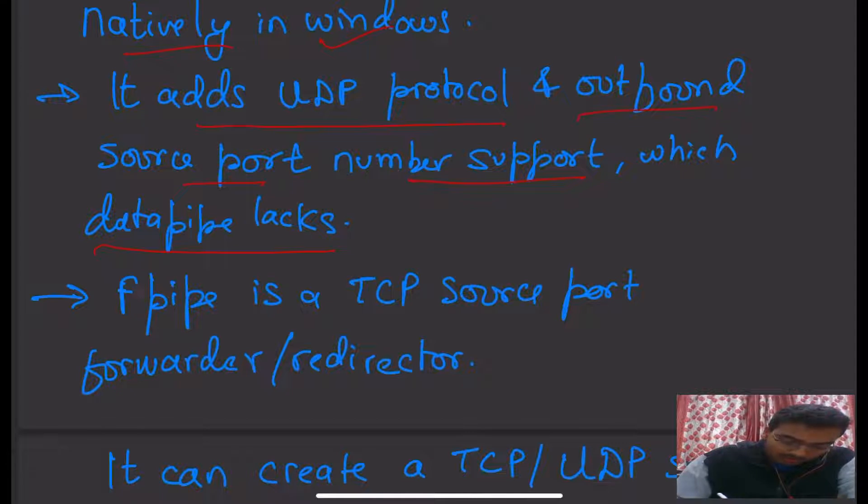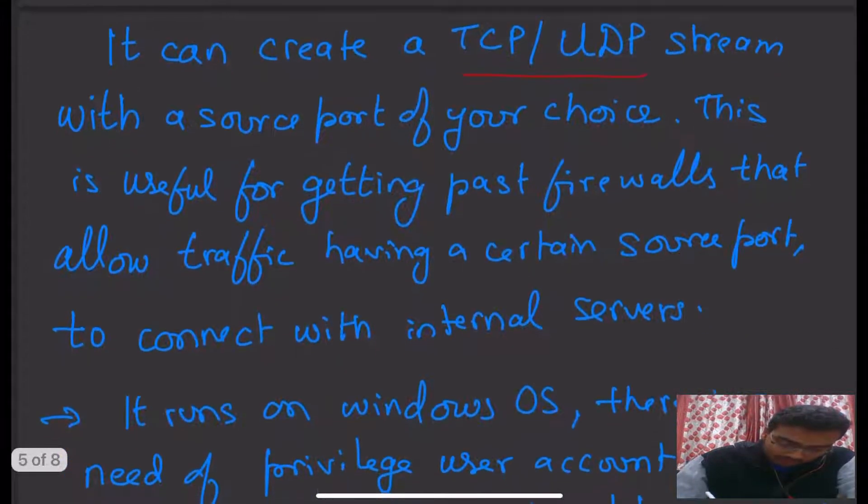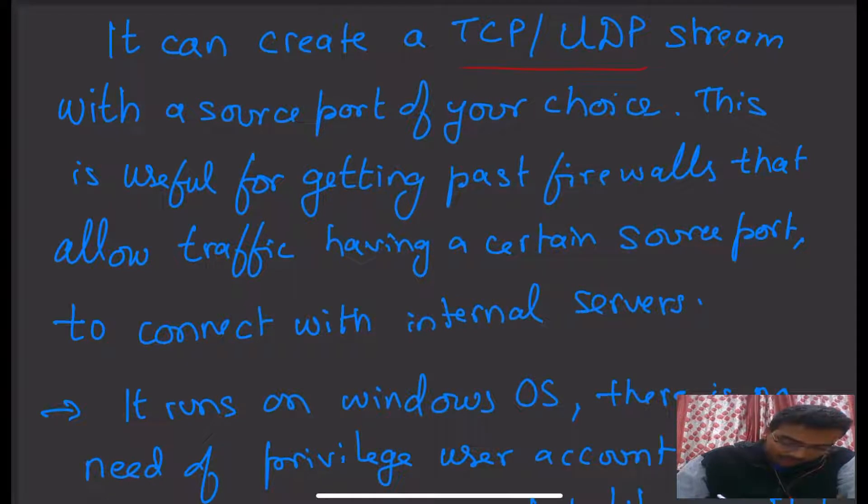F-Pipe is a TCP source port forwarder redirector. It can create a TCP UDP stream with a source port of your choice. This is useful for getting past firewalls that allow traffic having a certain source port to connect with internal servers.